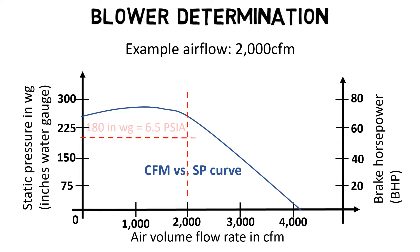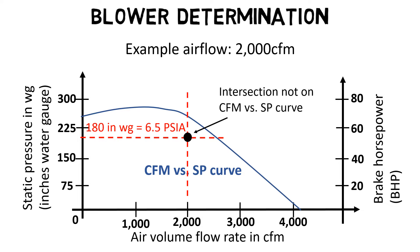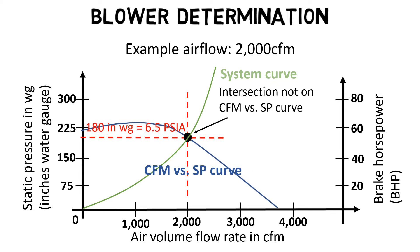Then draw a horizontal line from the left axis until it intersects with the first line. When the intersection of these two lines is not right on the fan curve, you will need to calculate or approximate a system curve and redraw the fan curve at a different RPM level. In our case, we will approximate the system curve. The system curve always has a parabola shape, starting at zero and going through the determined intersection of SP and CFM.